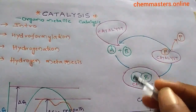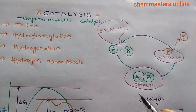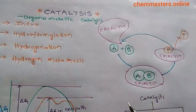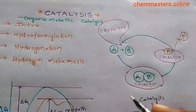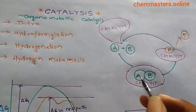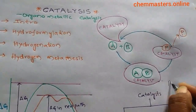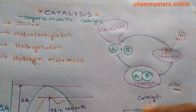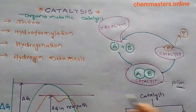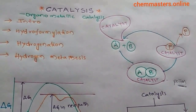What happens if a catalyst forms a stable intermediate with the reactants? If the catalyst forms a stable intermediate, that substance is considered a catalyst poison. It breaks the cycle and there is no chance of product formation. Such substances are considered catalyst poisons.